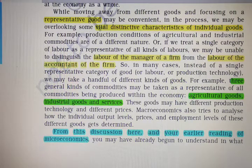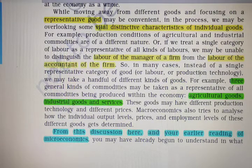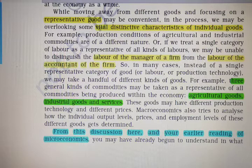For example, production conditions in agricultural and industrial commodities are of a different nature. If we treat a single category of labor as a representative of all kinds of laborers, we may be unable to distinguish the labor of the manager of a firm from the labor of the accountant of a firm. Both are laborers, but their characteristics are different. So taking a single commodity and generalizing it for all other commodities is not always valid.